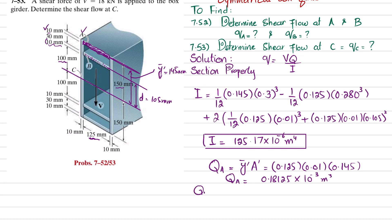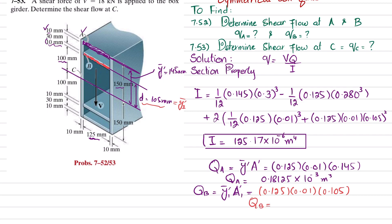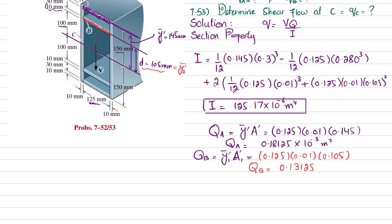Now we find Q_B. Q_B = Ȳ₁' × A₁'. The area A₁' is the same top flange plate: 0.125 × 0.01. The distance Ȳ₁' from the neutral axis to the mid of the plate at B is 105 mm = 0.105 m. Calculating: Q_B = 0.105 × (0.125 × 0.01) = 0.13125 × 10⁻³ m³.